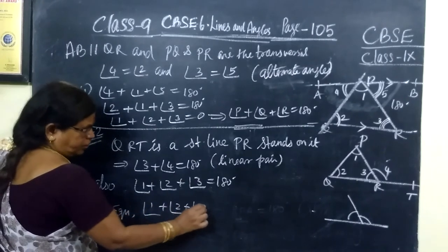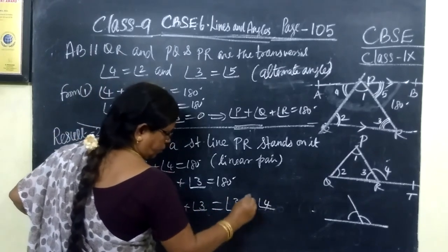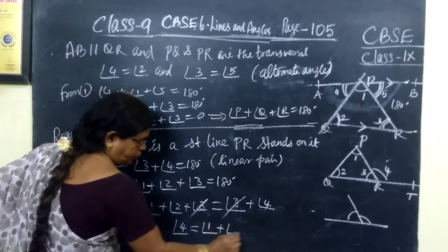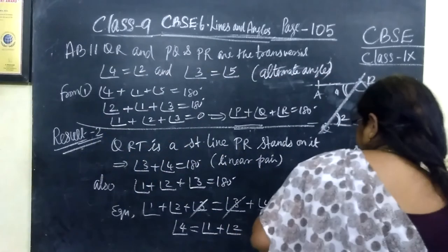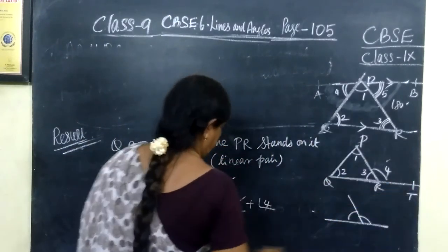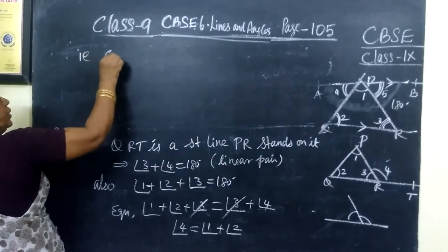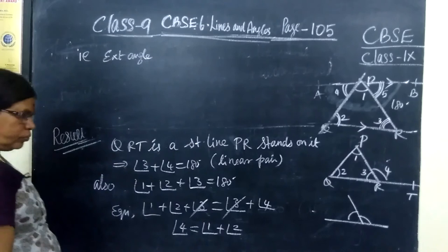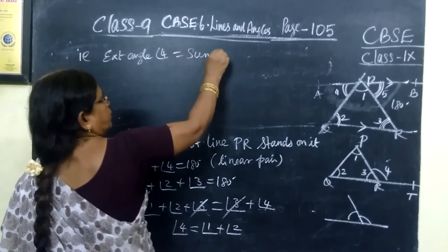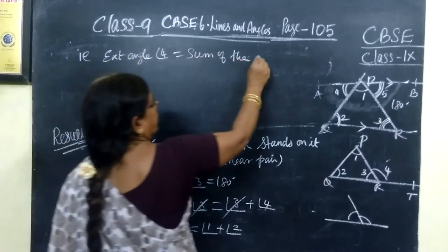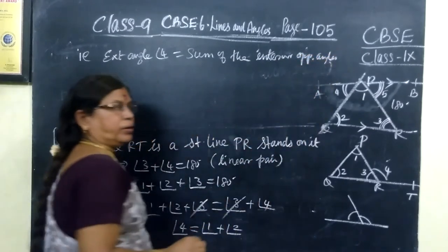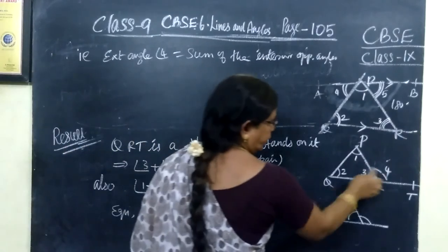Angle 1 plus angle 2 plus angle 3 equals angle 3 plus angle 4. Cancelling angle 3 from both sides, therefore angle 4 equals angle 1 plus angle 2. So the exterior angle equals the sum of the interior opposite angles. This is result 2: the exterior angle of a triangle is equal to the sum of its two interior opposite angles.